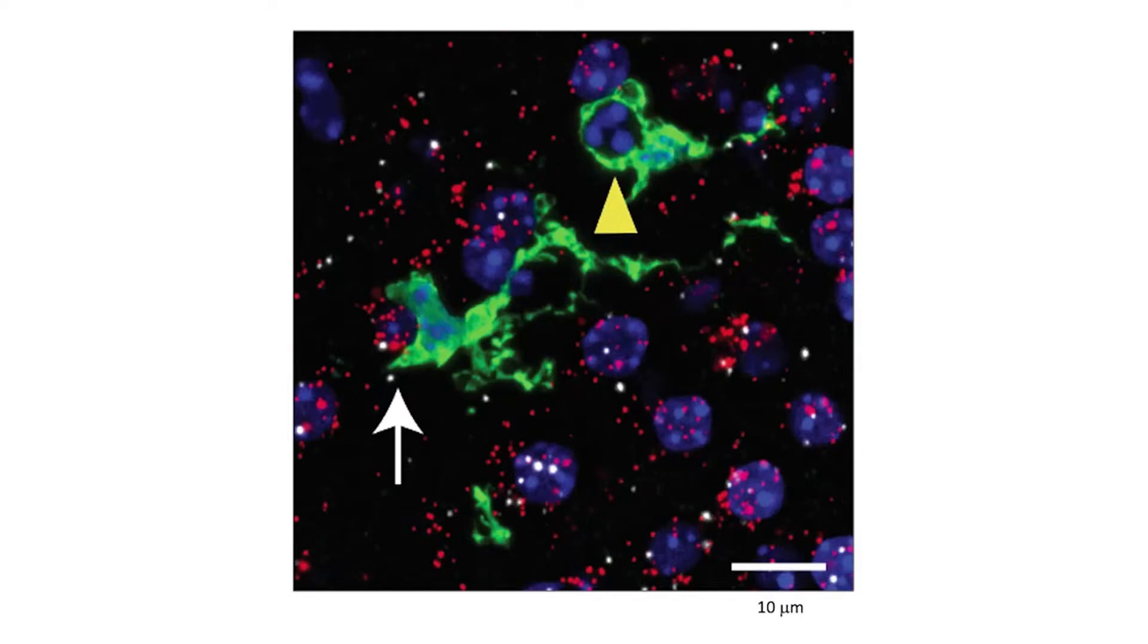In this picture, you can see imaging of microglia in green that have eaten cells. The cell nuclei are labeled in blue. All the little red and white dots are bits of RNA that tell us these nuclei are from neurons because they're mRNA that code for proteins specifically made by neurons.